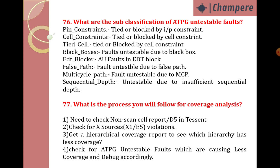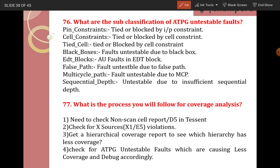Those are the different sub-classifications of ATPG untestable faults. Now, what is the procedure you follow for coverage analysis? First, check whether non-scan cells are present. If non-scan cells are there, check the non-scan cell report or DFT violation in Tessent. Next, check for X sources — if X source violations are there, get a hierarchical coverage report to see which hierarchy has less coverage.